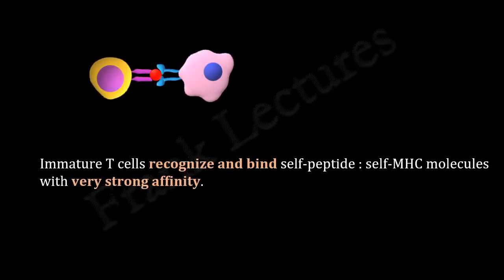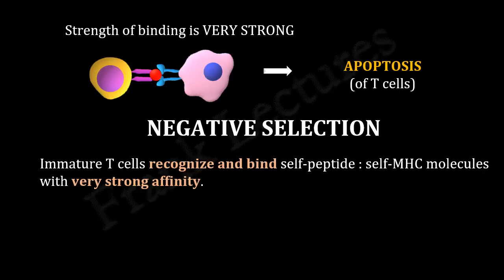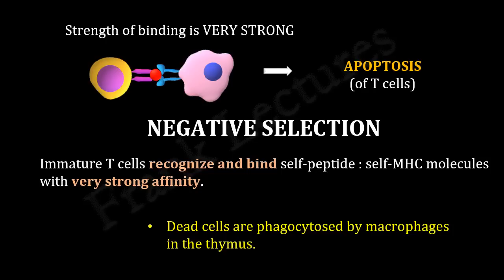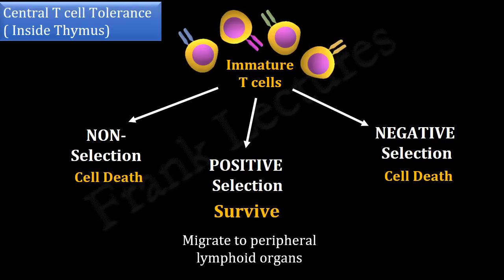Those immature T-cells that bind very strongly to self-peptide self-MHC molecules undergo cell death or apoptosis. Such T-cells are potential auto-reactive cells. This process of removal of these selected T-cells is known as negative selection. Dead cells are phagocytosed by macrophages in the thymus. So in central T-cell tolerance, immature T-cells selected by positive selection survive, and these are the cells with potential of recognizing non-self antigens in complex with MHC molecules. These immature T-cells leave the thymus and migrate to the secondary lymphoid organs. Negative selection removes all the potential auto-reactive T-cells that recognize self-antigens.